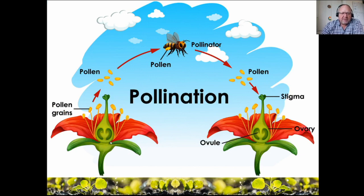We know the nectary is down here; this is the anther, and the thin part is called the filament. Together it's called the stamen. The female part of the flower is the pistil, which consists of the sticky stigma, the style, the ovary, and then the ovules.